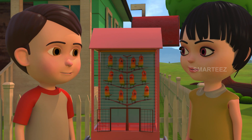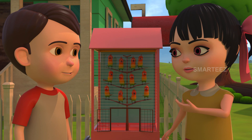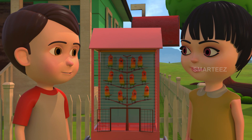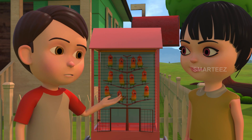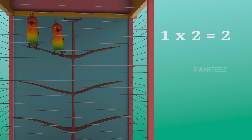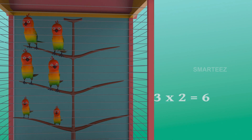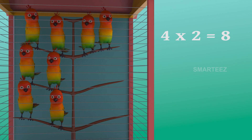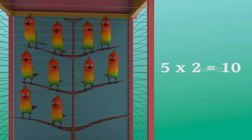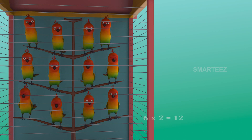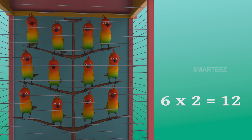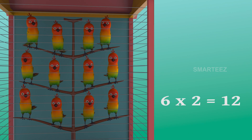There were ten in the cage already. Now there are two more, making it twelve. Yes, six twos make it twelve. The first set had two parakeets. The second set of two were added, it became four. The third set of two made it six. The fourth set of two made it eight. The fifth set of two made it ten. The sixth set made it twelve. So six sets of two parakeets make it twelve parakeets.